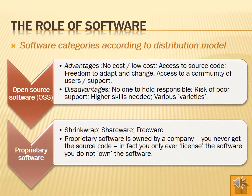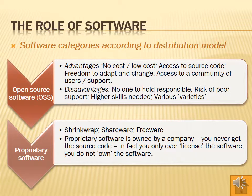Software is broken up into two types: open source software and proprietary software. Open source software is software that you don't actually have to pay for — it's freely available, you download it and can use it as much as you like. You can copy it and give copies to friends, and it is a way to access a lot of software without having to pay large amounts of money.